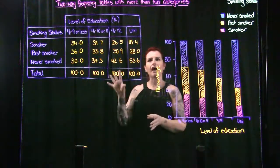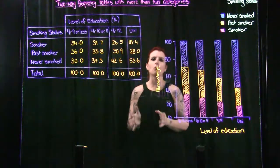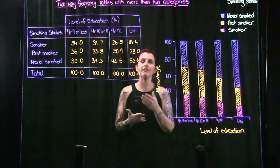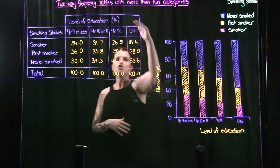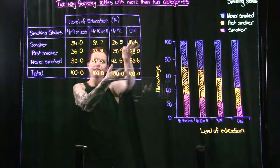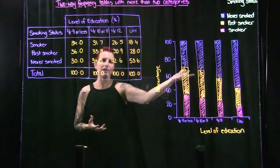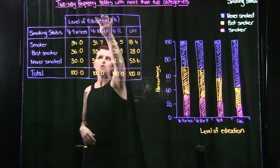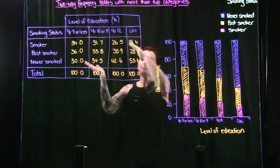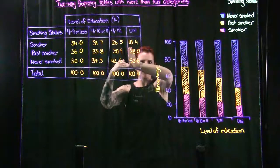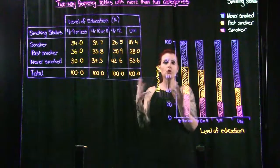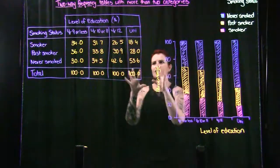This video is looking at two-way frequency tables with more than two categories. It's really important to remember that a two-way frequency table just means there are two ways — columns and rows. Having more than two categories is fine. We're looking at two variables: level of education and smoking status. Two-way means you can have more than two categories.